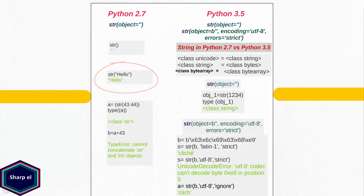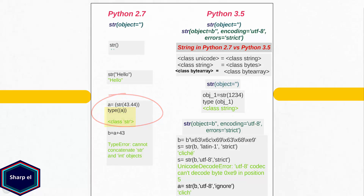Let's call the string function with an integer object and assign the return value to a. Now we print the type of object a. As you can see, object a is now an instance of class string. In case you try to add an integer to object a, it will give you a type error. So in nutshell, the string function converts any other object to a string object.